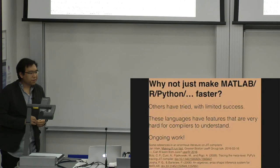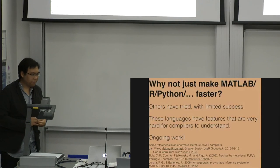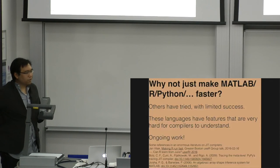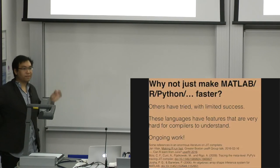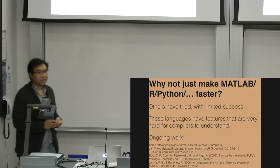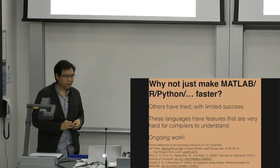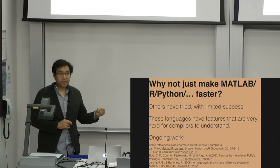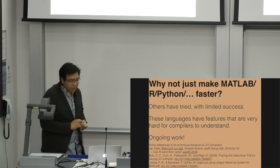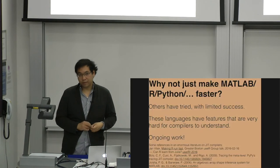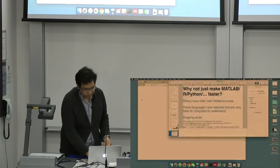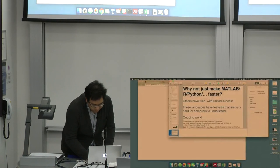Why can't you just make MATLAB or R or Python or all these other languages faster? It's a question that happens all the time. Others have tried and with limited success. And the very short answer to this is that these languages have features that are very hard for compilers to understand. And hopefully what I've just talked about for the last half an hour will give you a thought about why. And it really is important that you design languages with features that are easy to analyze. Just as it is important for a language to have features that are easy for humans to use.